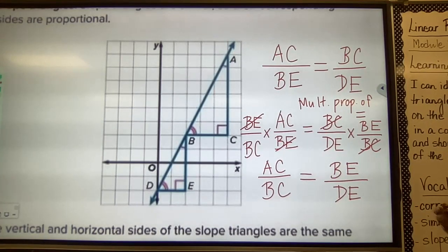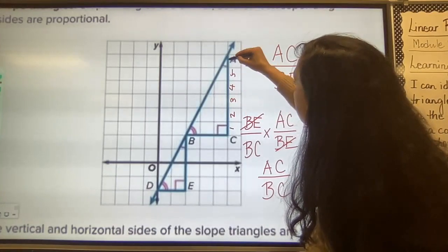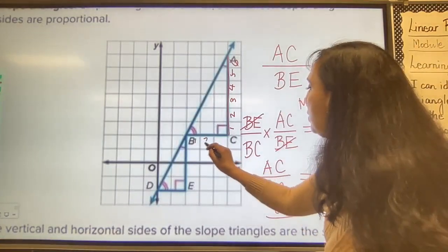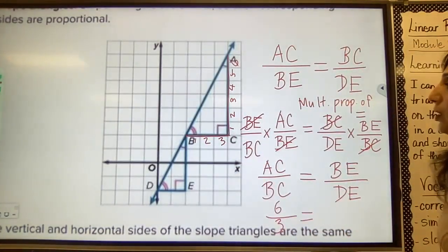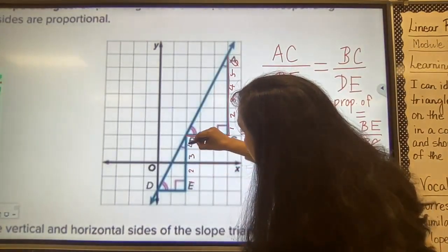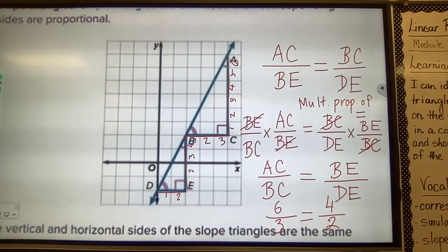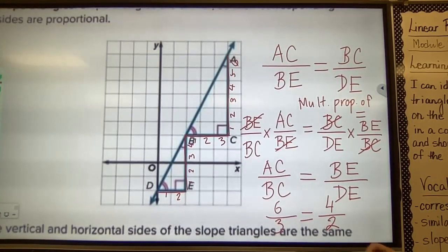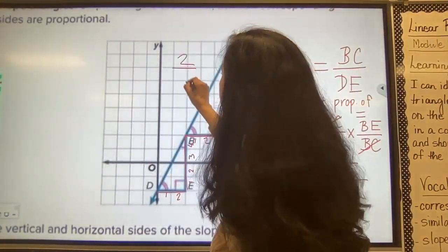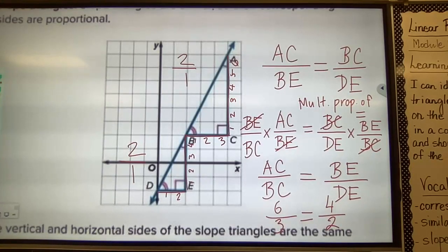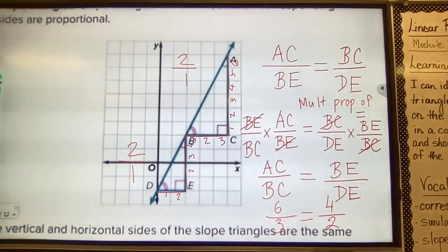AC is 6 and BC is 3, so AC over BC is 6 over 3. BE is 4 and DE is 2, so BE over DE is 4 over 2. Both ratios equal 2 over 1. Since the ratios AC over BC and BE over DE are equal, the slope is the same anywhere on the line.